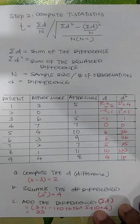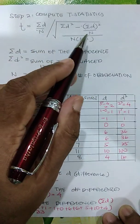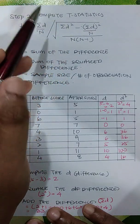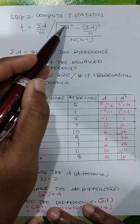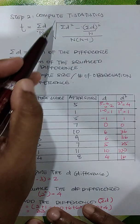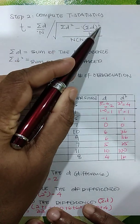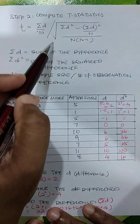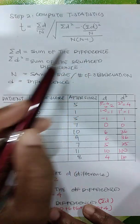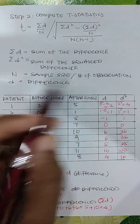Step 2 is to compute the T statistic. We are converting the raw information — D, the difference between scores — into a T score. The formula is: the sum of D divided by N, all divided by the square root of [sum of D² minus (sum of D)² divided by N], divided by N minus 1. Here, sum of D is the sum of differences, sum of D² is the sum of squared differences, and N is the sample size.